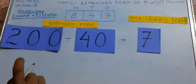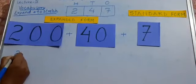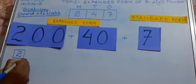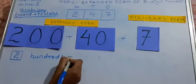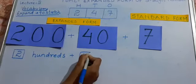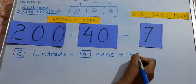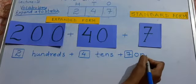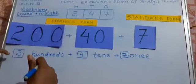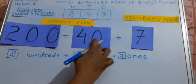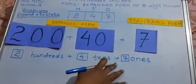Now, we have another way to represent this in expanded form: 2 hundreds plus 4 tens plus 7 ones. So the numeral 247 is expanded in two ways — first: 200 plus 40 plus 7, and the second way: 2 hundreds plus 4 tens plus 7 ones.